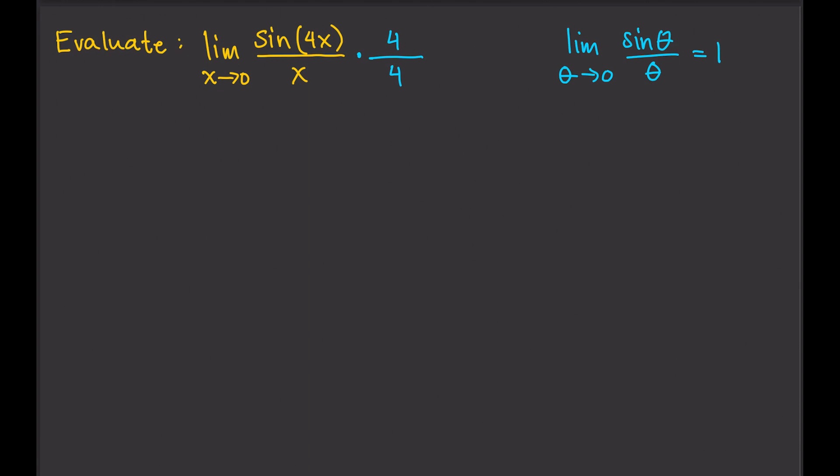So now, the limit becomes limit as x approaches 0. Then my numerator is 4 sine 4x. My denominator is 4x. So now, the argument and the denominator are equal.